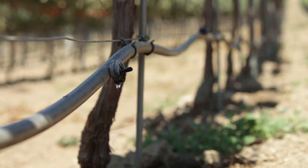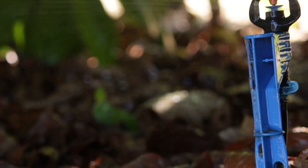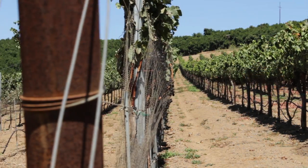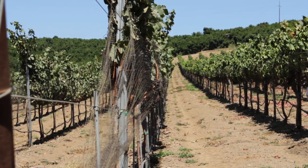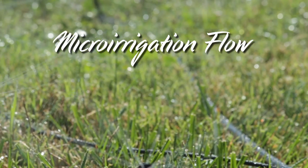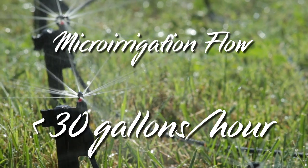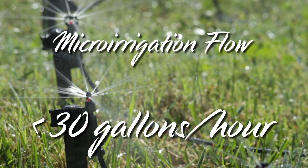Drip and microirrigation are advanced forms of irrigation that allow for precise water applications to plants. These methods are used in agriculture and landscape irrigation. Microirrigation has flow rates of less than 30 gallons per hour per emitter and uses polyethylene components.